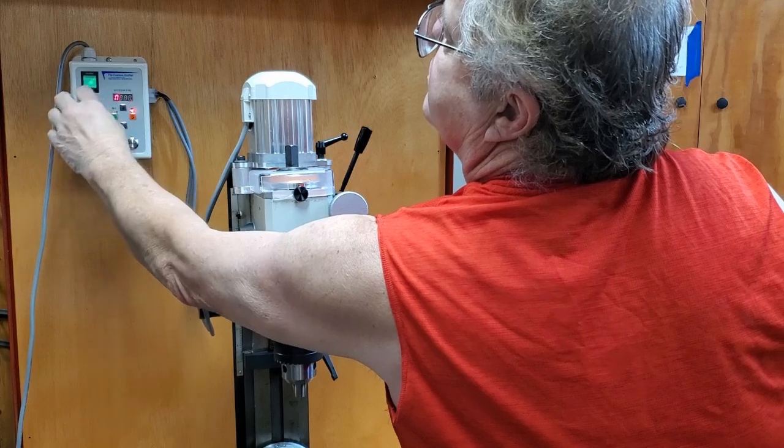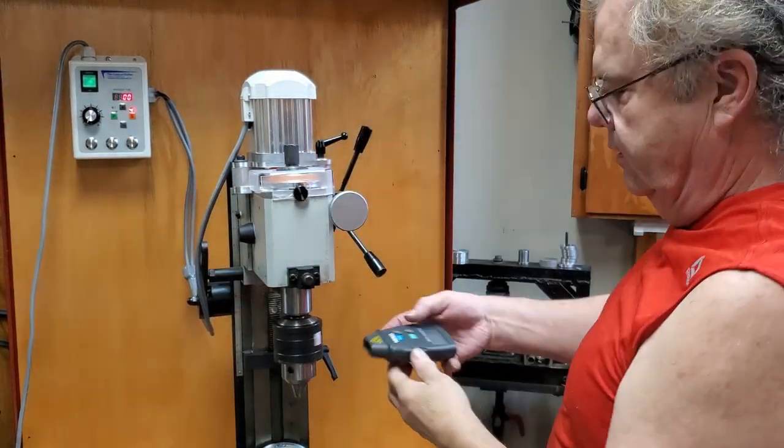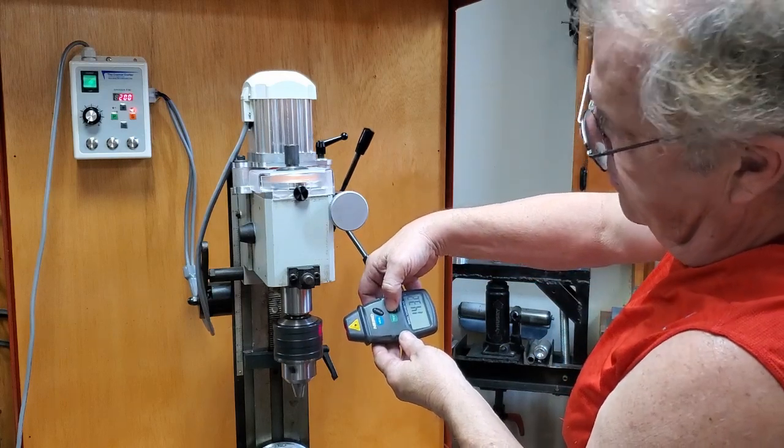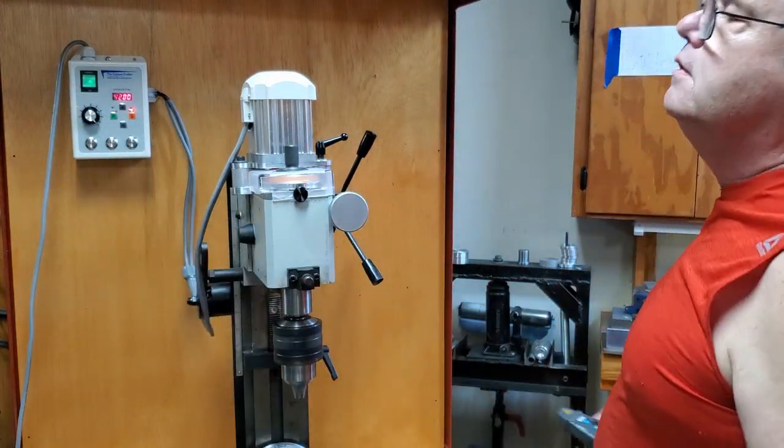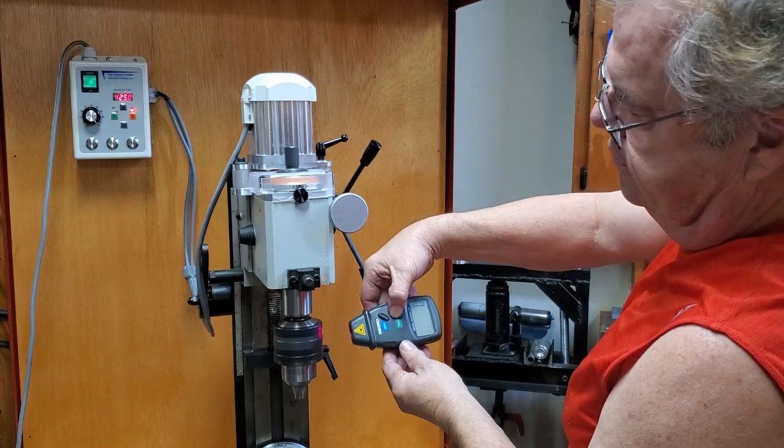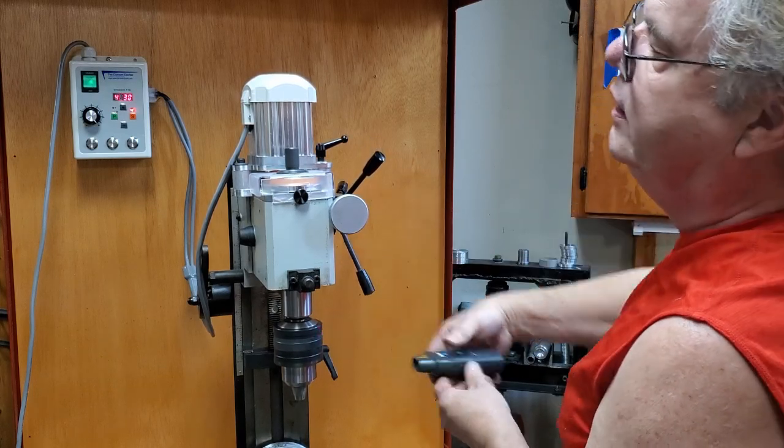We'll do some speed checks. Slow speed 200 on the motor, 143 on the spindle. Top speed 4200 on the motor, 3178 on the spindle.